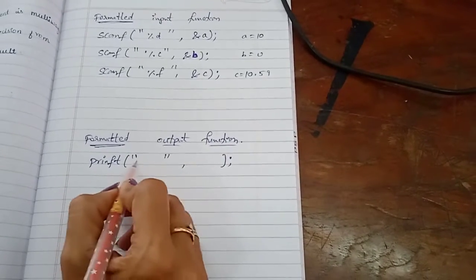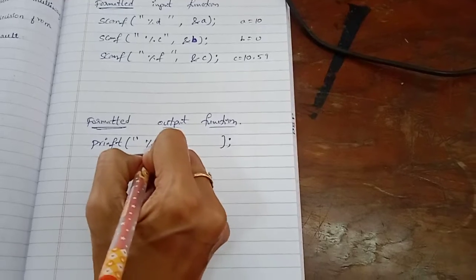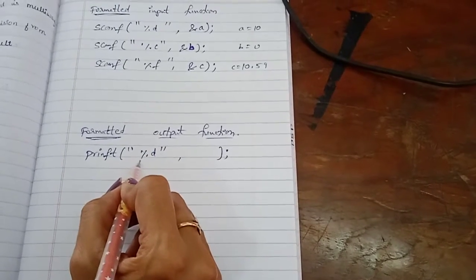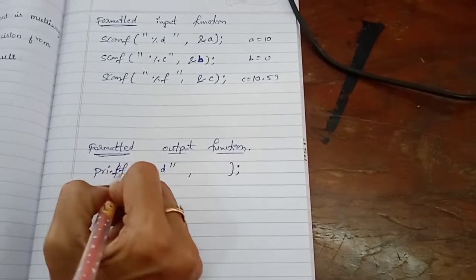This is in between the double quotations. Whatever the input you are giving, that same format specifier you should use for the output function, printf.